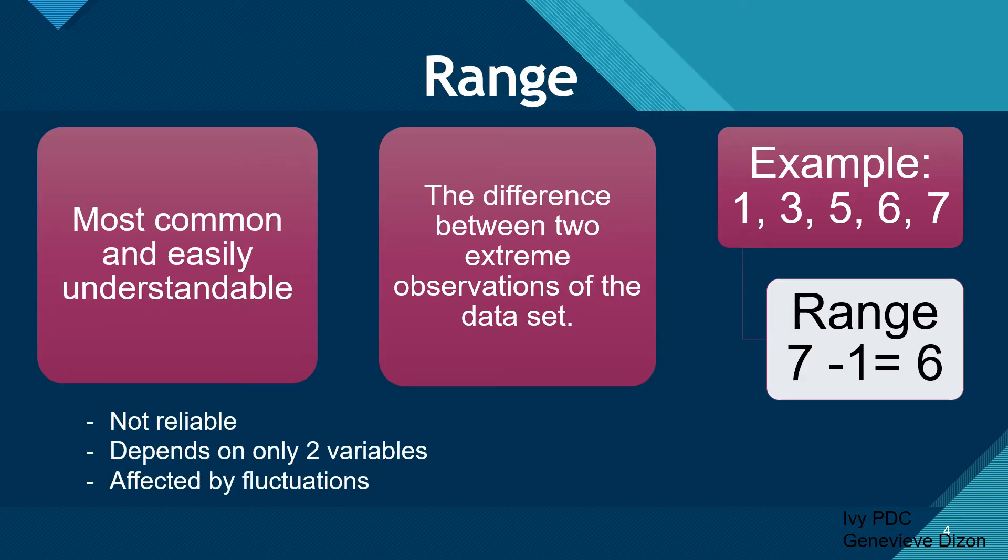Range is based on two extreme observations only. That's why it is not reliable, because it only depends on these two variables and may also be affected by fluctuations.